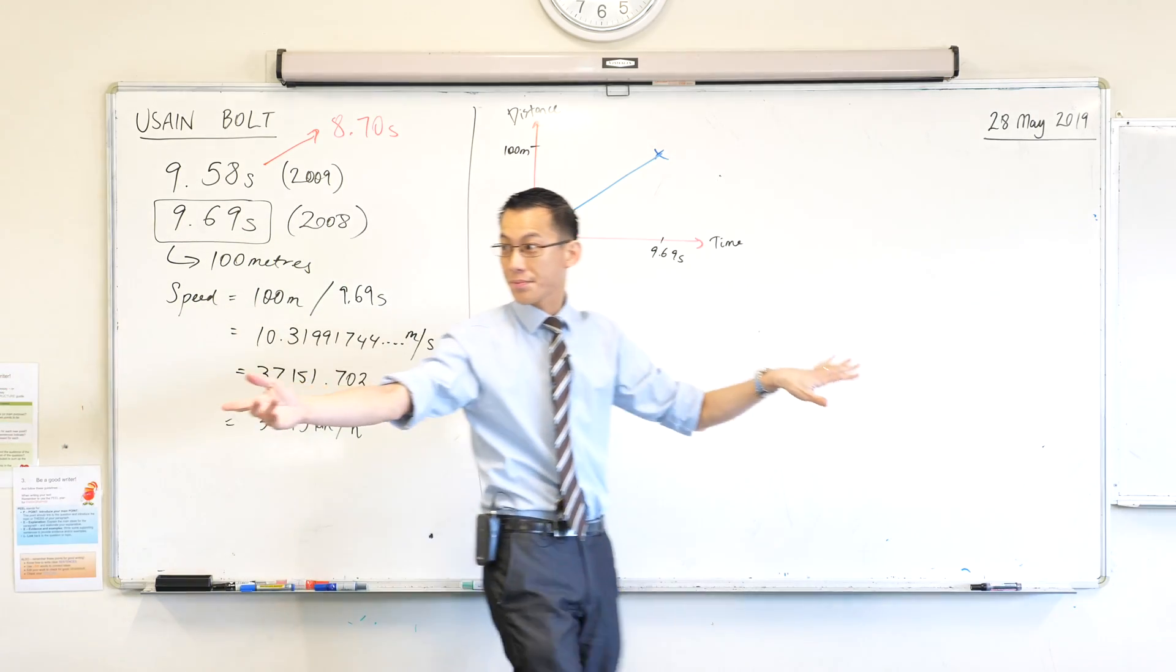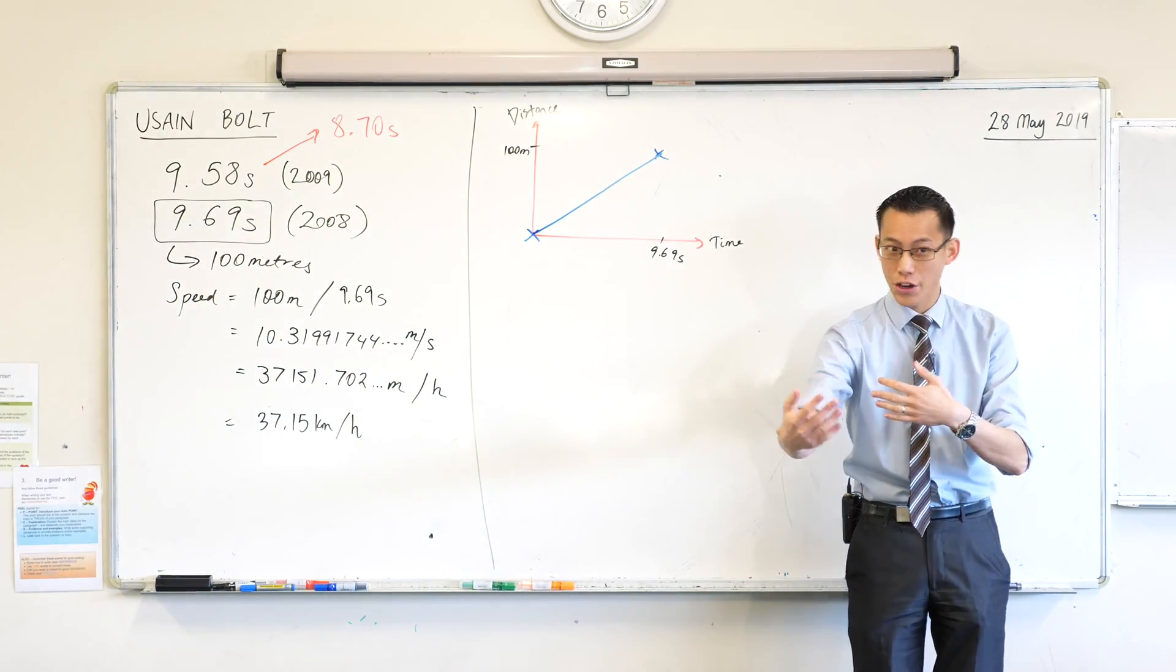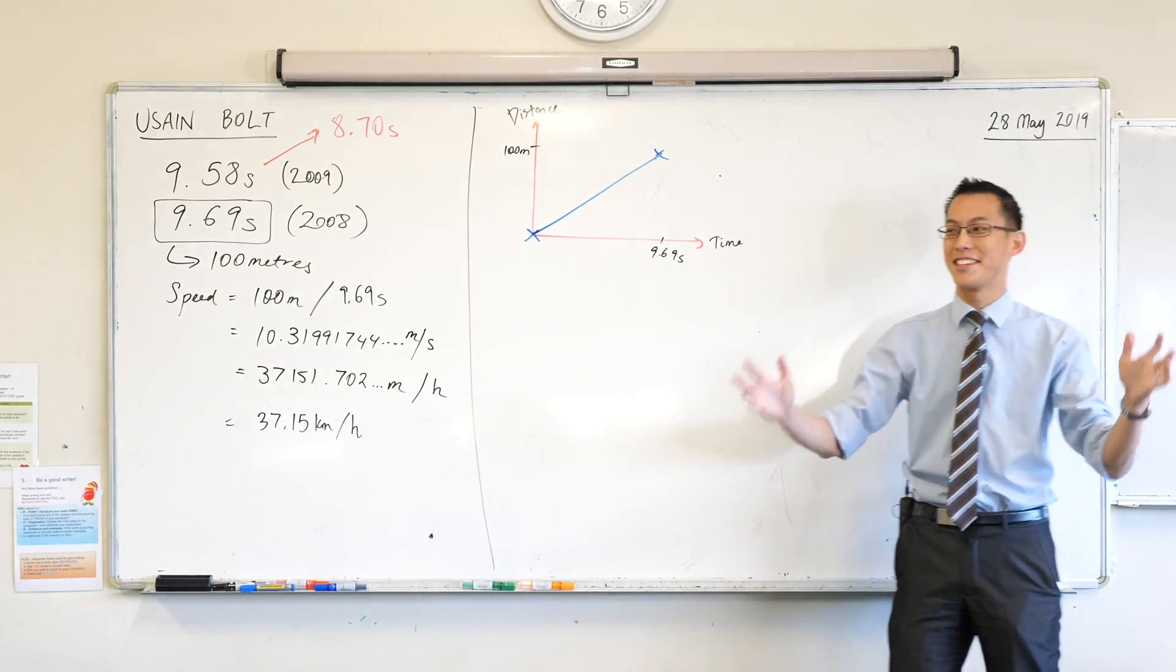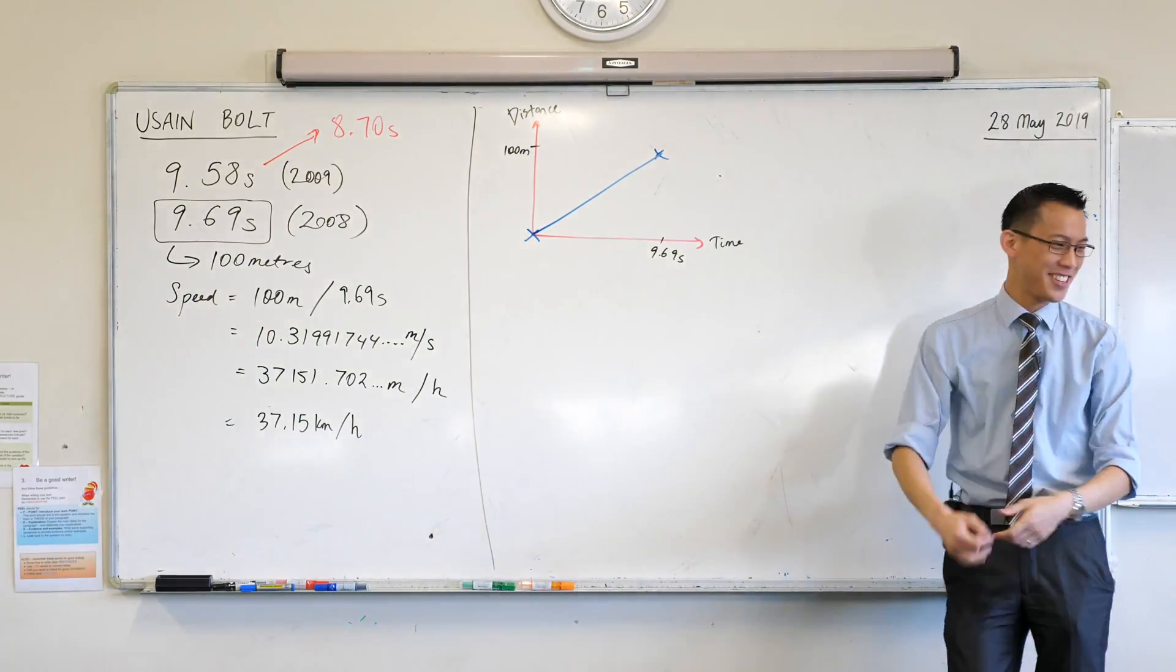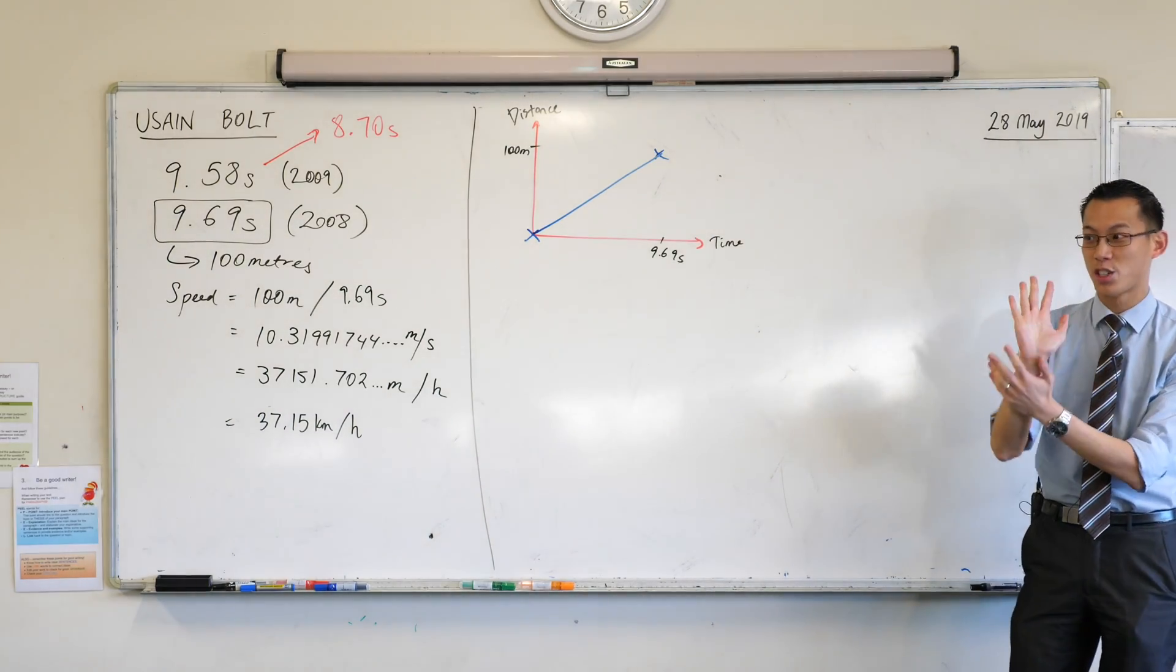Yeah, at the end, he actually, what he does is he's running, and I think with about 20 metres to go, he looks around to see where the competition is, and he realises he can't see them. So he's just like, oh, I've won. He literally puts his arms down, beats his chest. And he just sort of slows down.